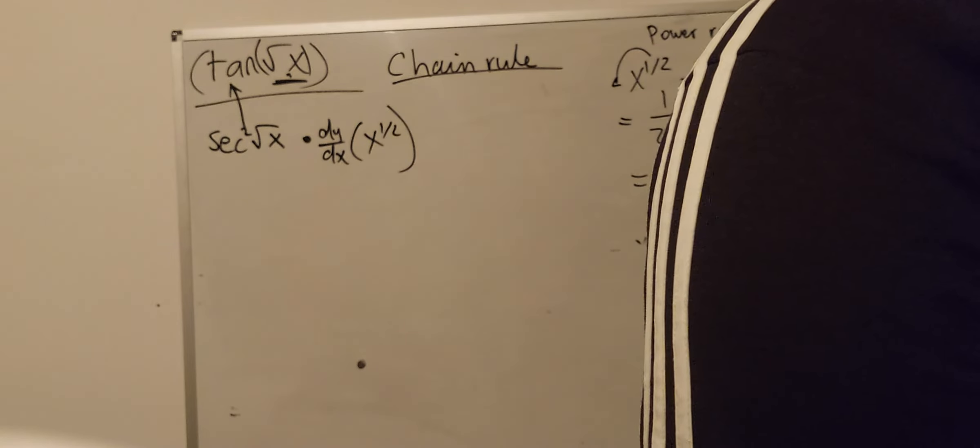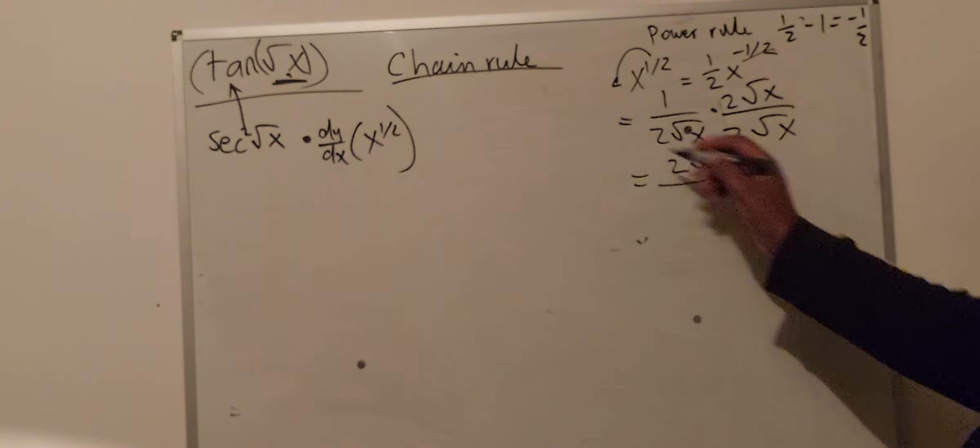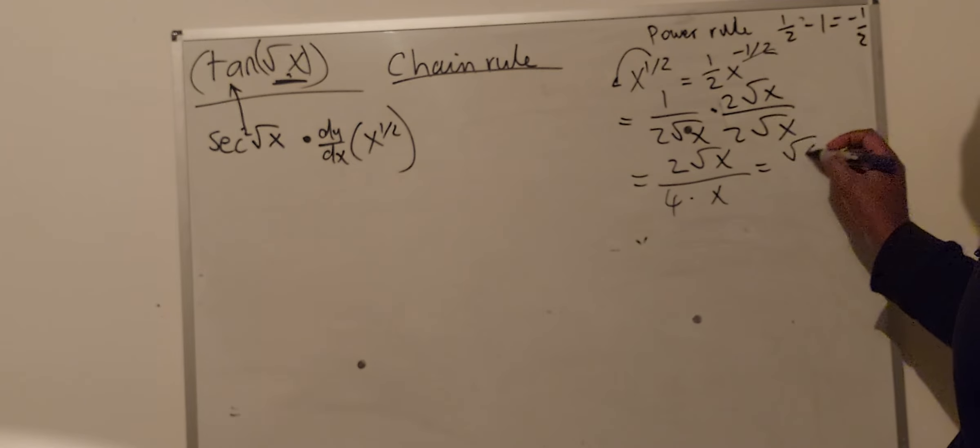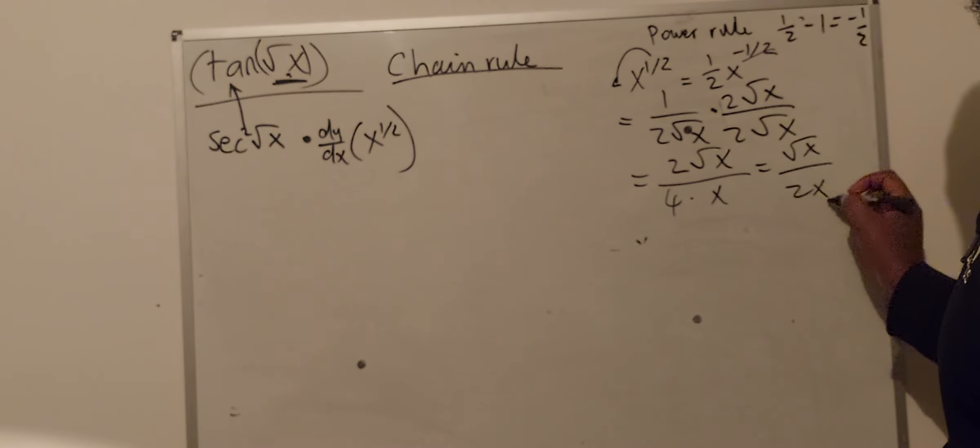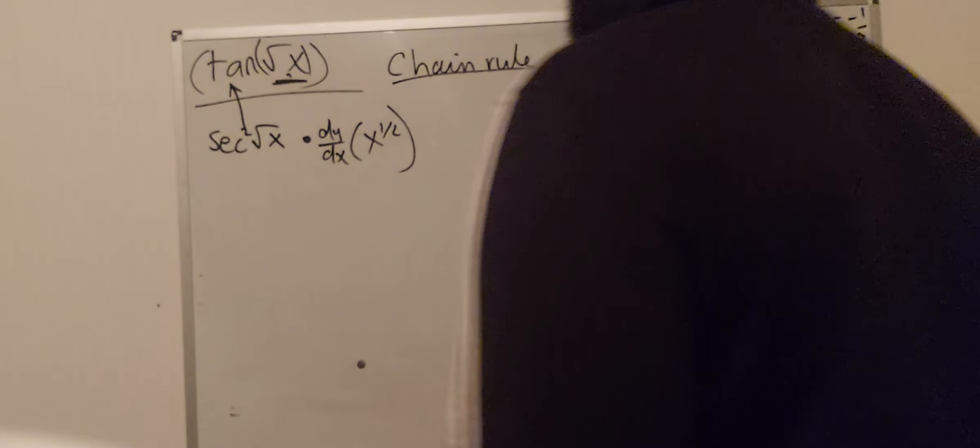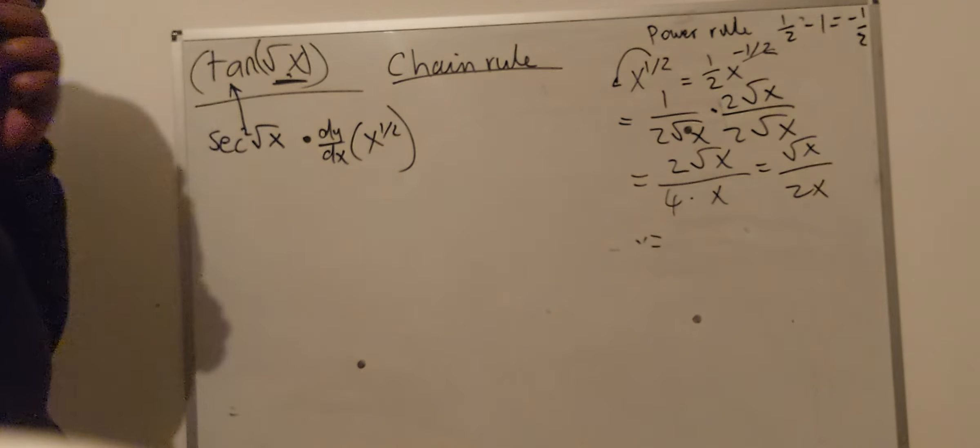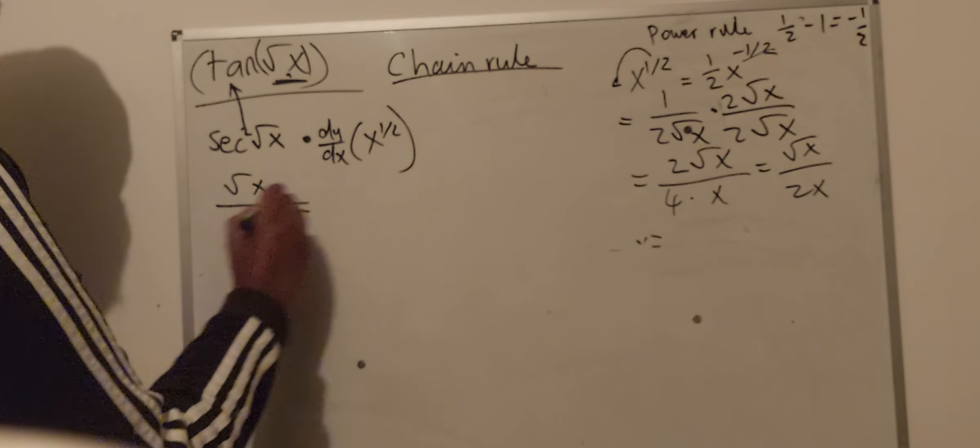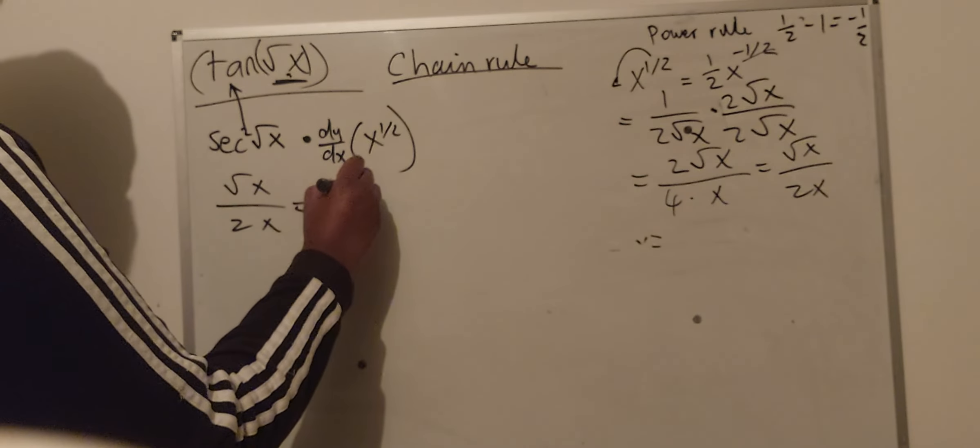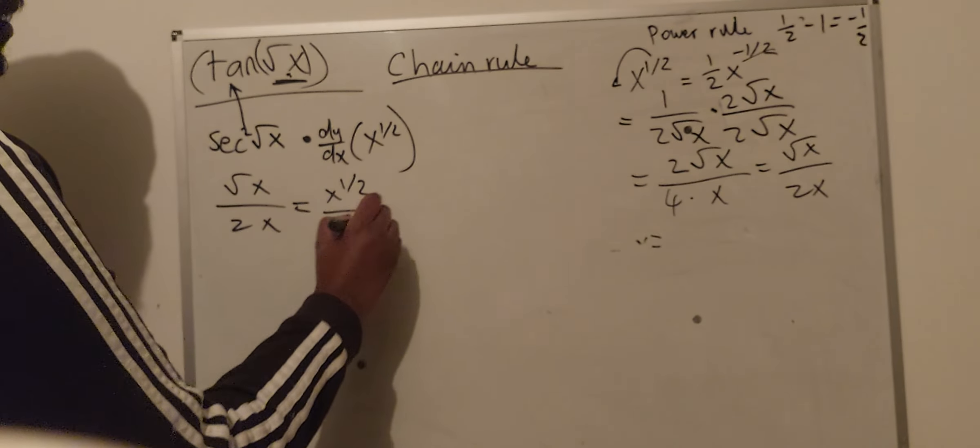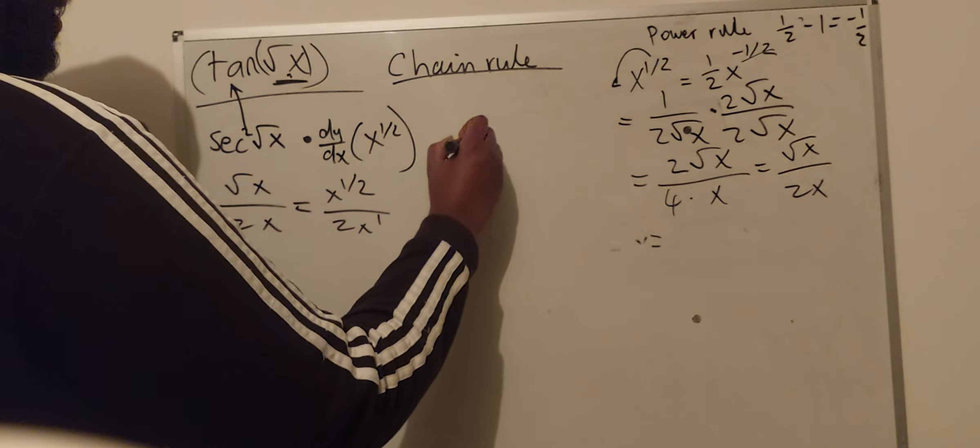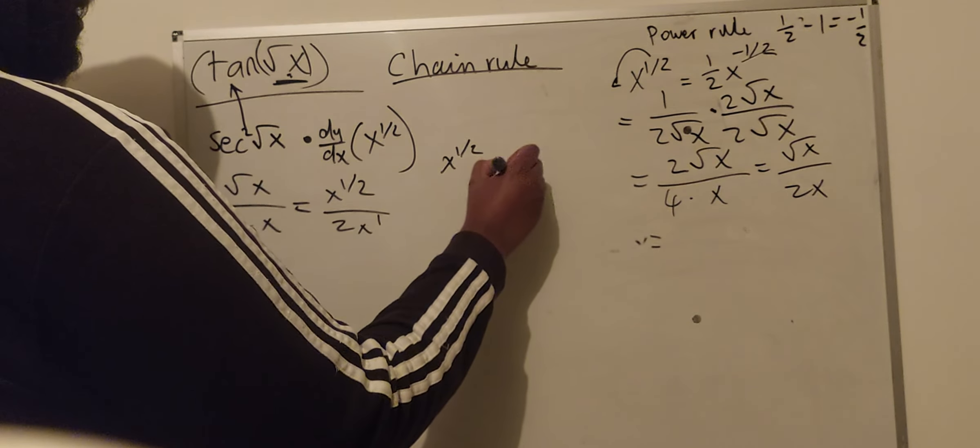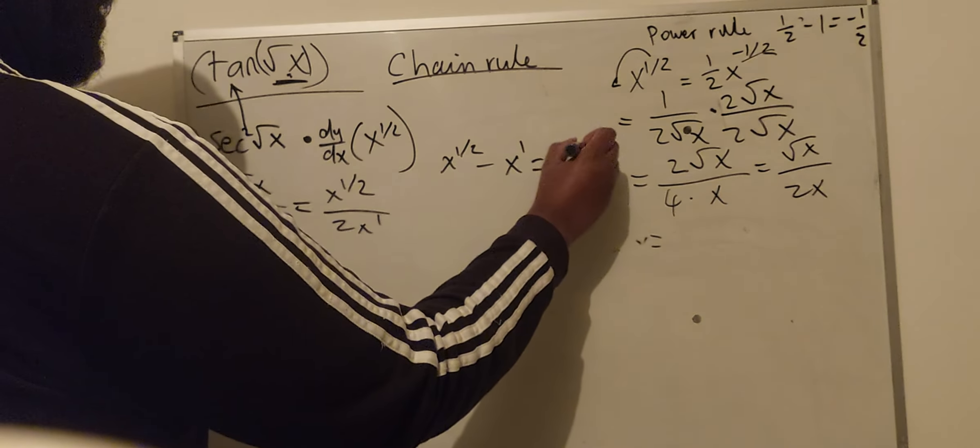Now, the top is going to stay as 2 squared root x divided by 4 times x, which is also equal to square root of x divided by 2x. Let's just write it over here. Square root of x divided by 2x is also equal to x to the power of a half divided by 2x to the power of 1. Now, x to the power of a half minus x to the power of 1 is going to be x to the power of minus a half.